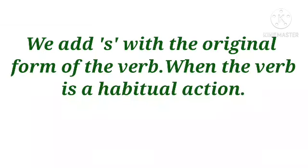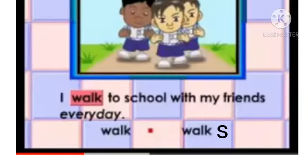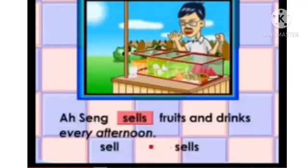We also add S to the verb when the action is a habitual action. For example: I walk to school with my friends every day — this shows a habitual action, so the verb is 'walks.' O-Sing sells fruits and drinks every afternoon — this shows a habitual action, so the verb is 'sells.' If the pronouns are he, she or it, we add S or ES with the verb. If the pronouns are I, you, they or we, we cannot make any changes to the verb.